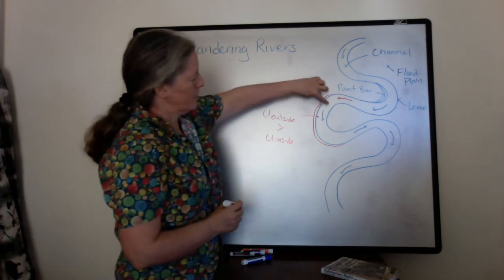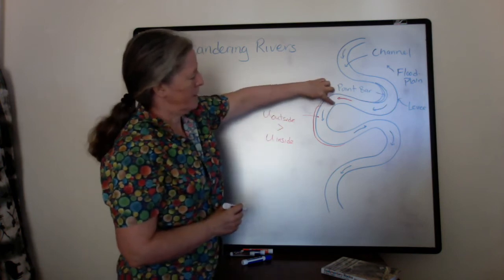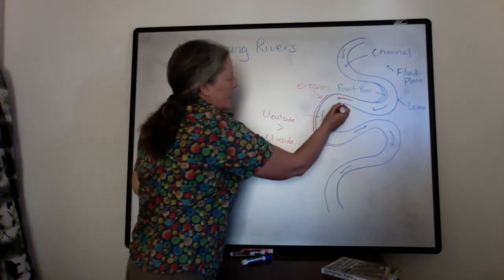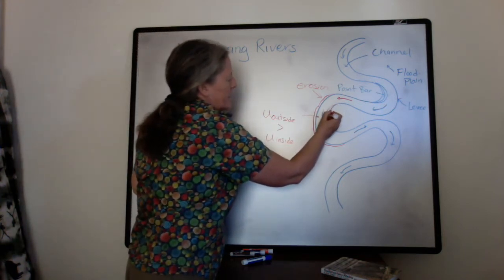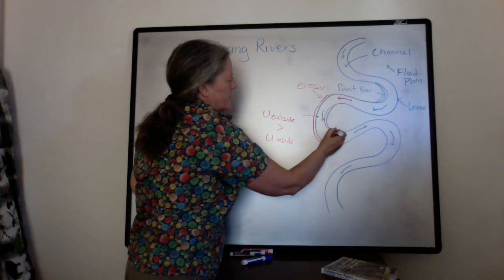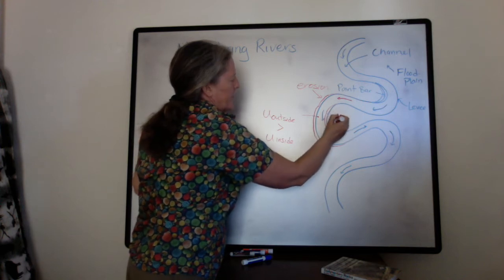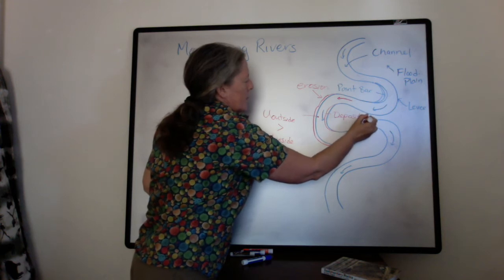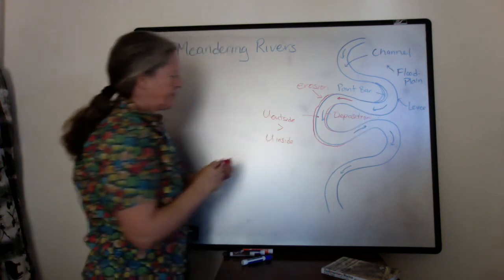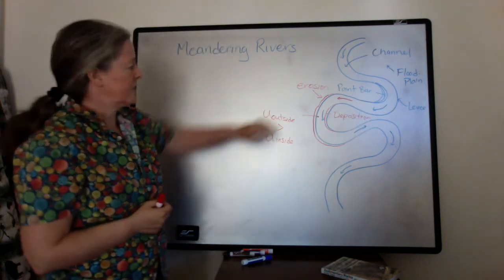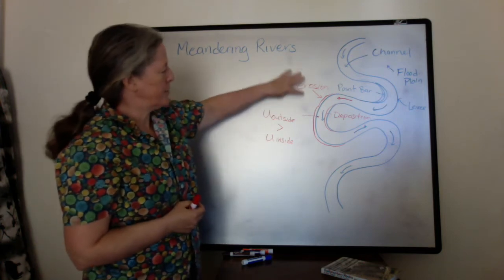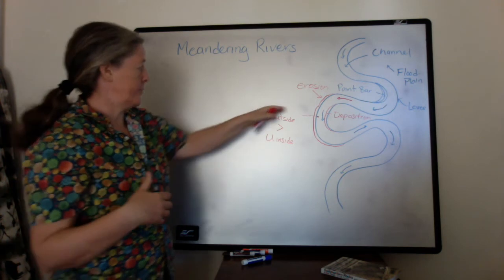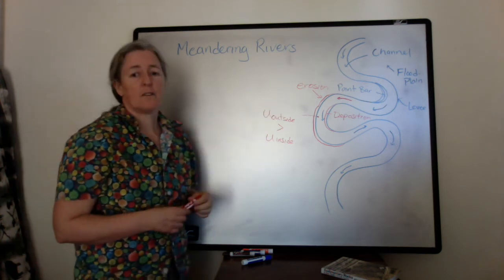Because the water is moving more slowly on the inside, you tend to get deposition on the inside of the bend. So this dynamic of erosion on the outside and deposition on the inside tends to drive the formation of these river bends or meanders.